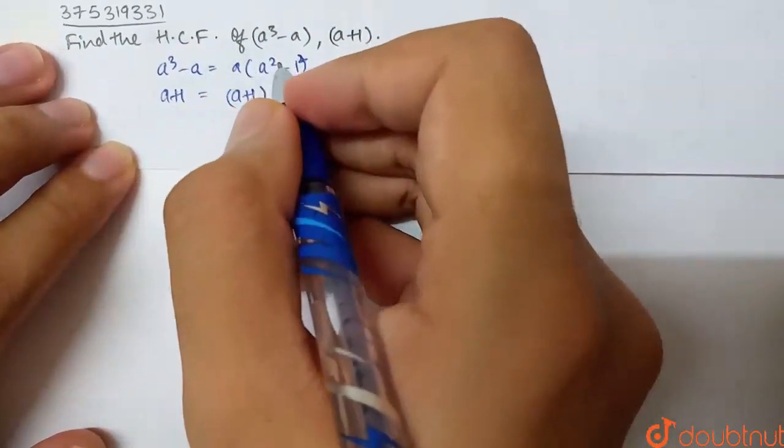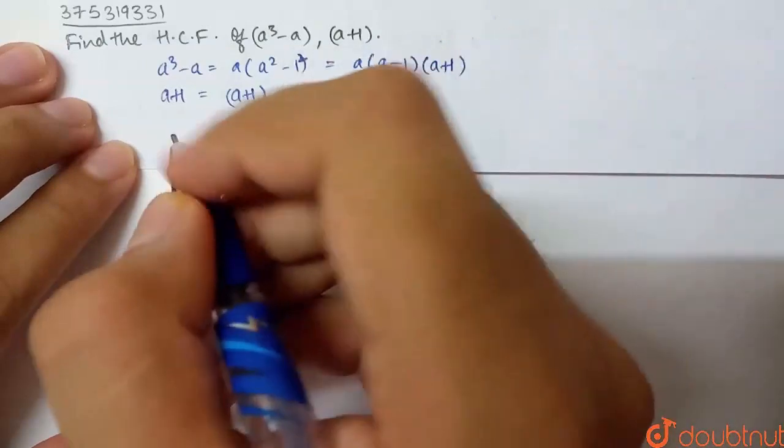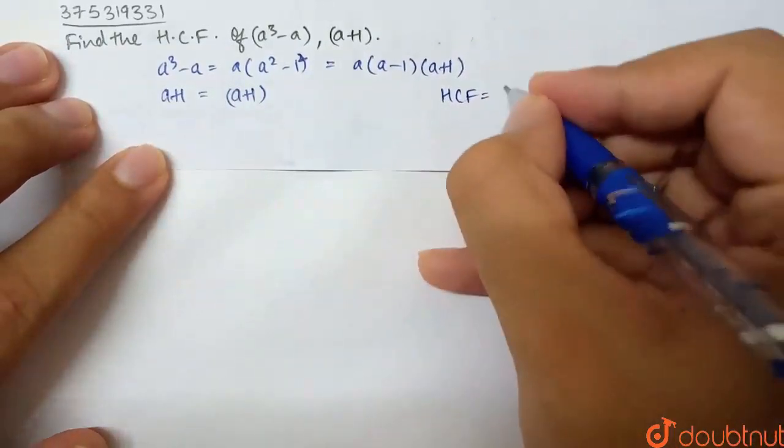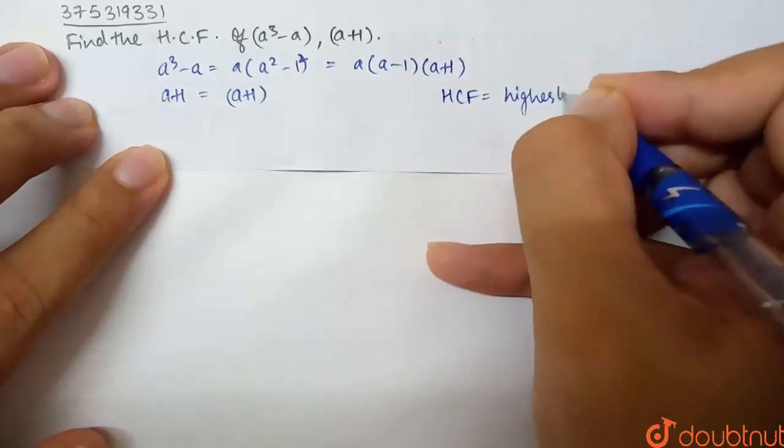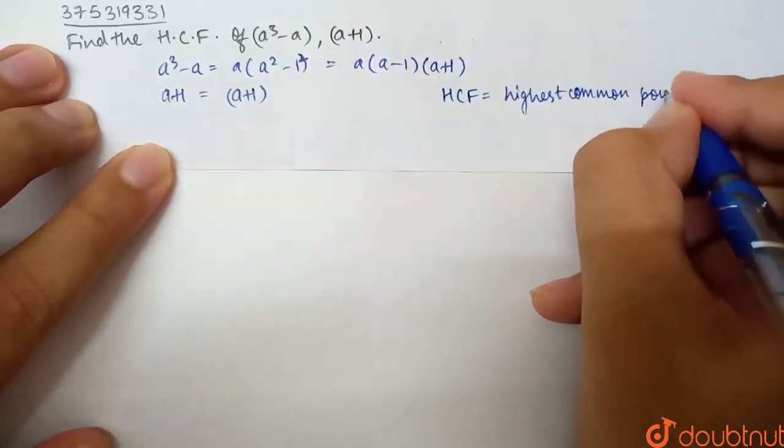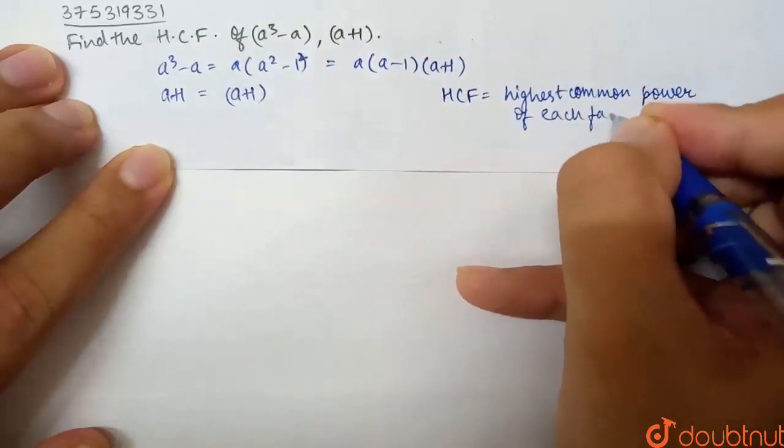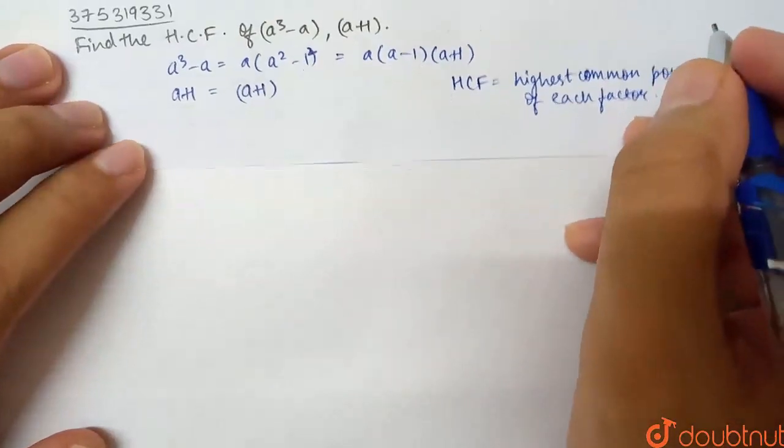Now what is HCF? We have HCF. It has the highest power of each individual factor, which is common. HCF is highest common power of each factor.